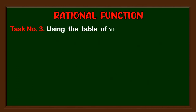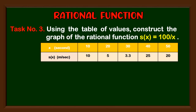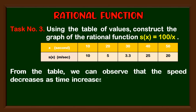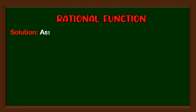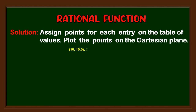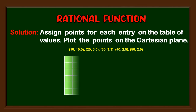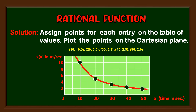Task number three: using the table of values, construct the graph of the rational function s(x) = 100 / x. From the table we can observe that the speed decreases as time increases. We can use the graph to determine if the points on the function follow a smooth curve or a straight line. Assign points for each entry on the table of values and plot them on the Cartesian plane. Given the set of ordered pairs from the table, by connecting the points we can see that they are not collinear but rather follow a smooth curve.